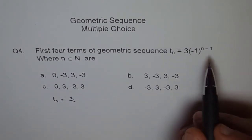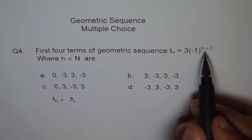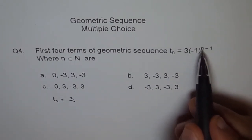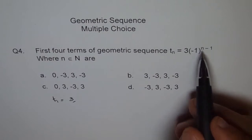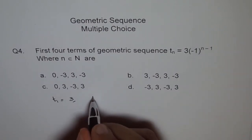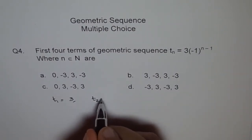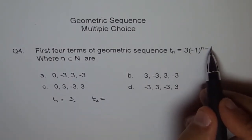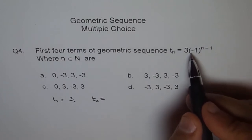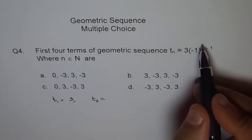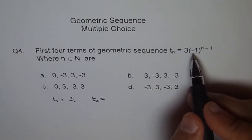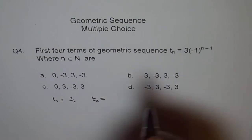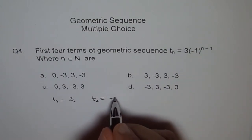For the second term, n equals to 2, term number 2, T2. So 2 minus 1 is 1. Negative 1 to the power of 1 will be minus 1, and therefore we will get minus 3.